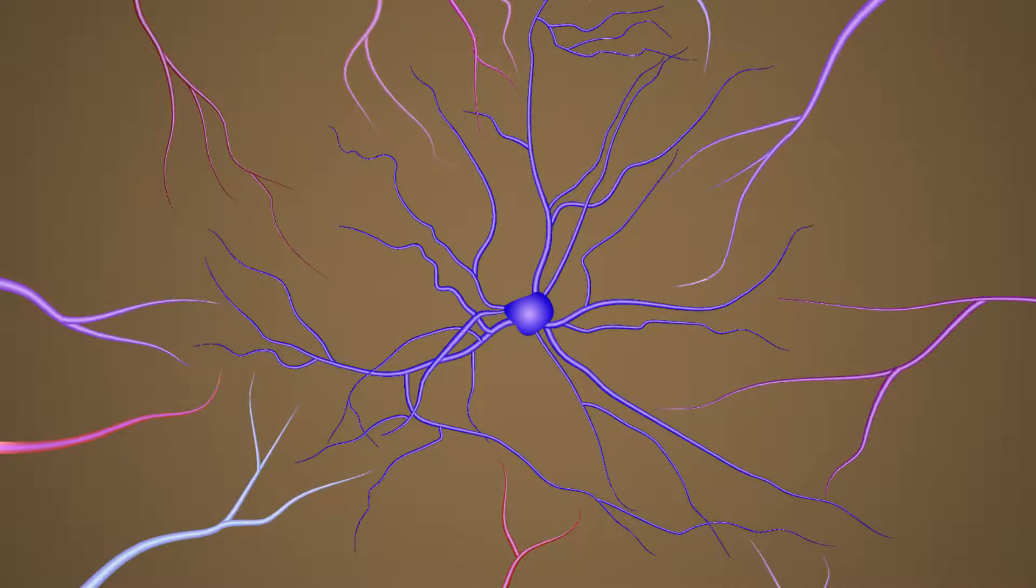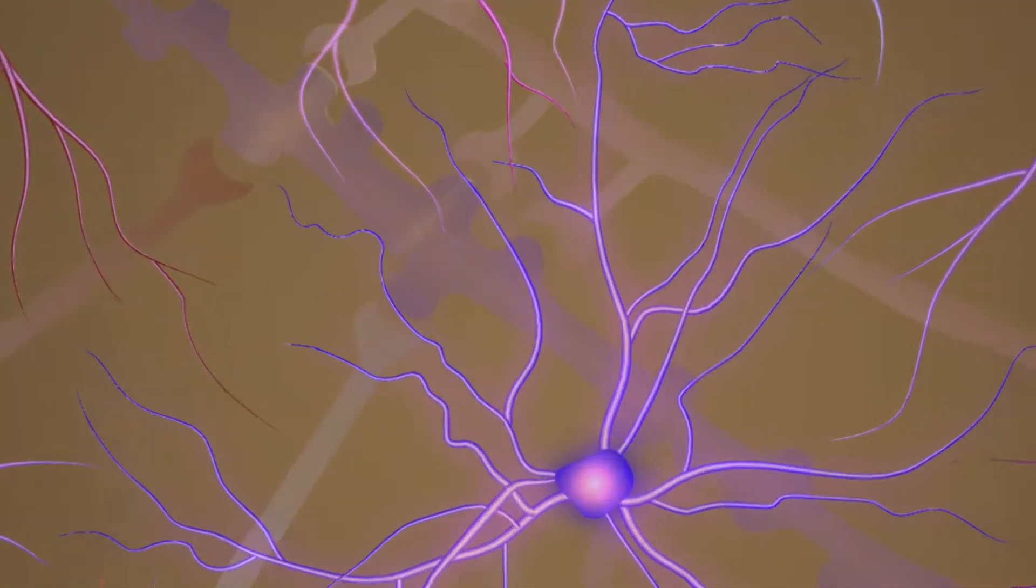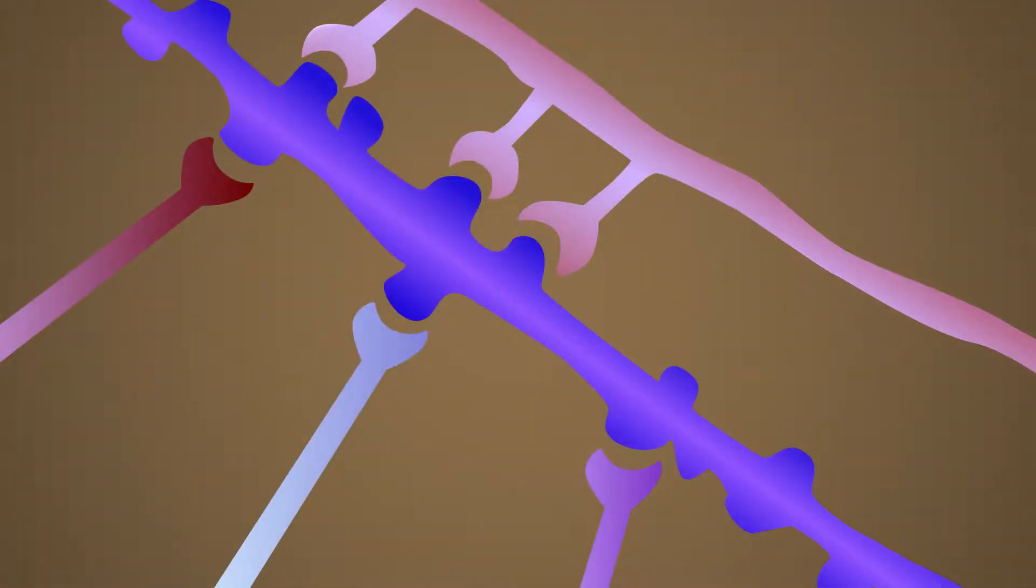This local functional synaptic clustering applies to a diverse set of inputs and appears to be a fundamental principle of dendritic organization. Future work should reveal more about the source of these clustered inputs and how these clusters arise during the development of neural circuits.